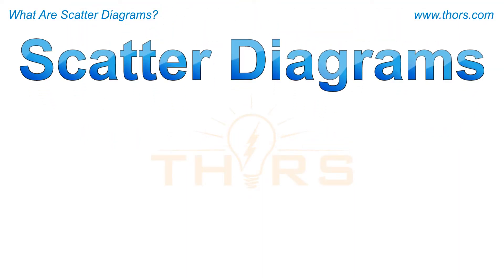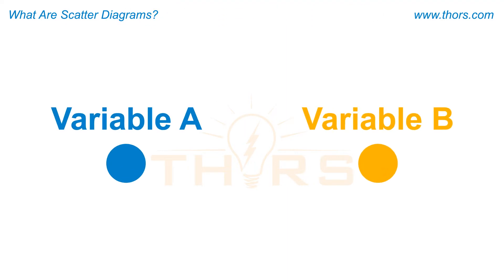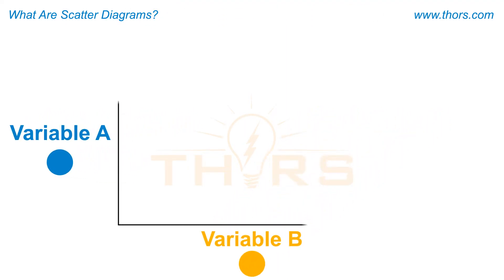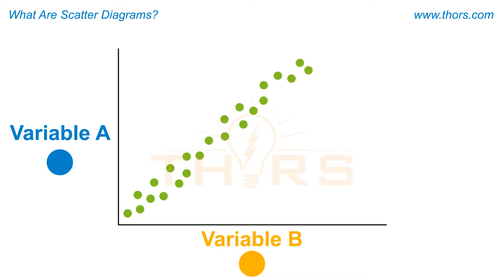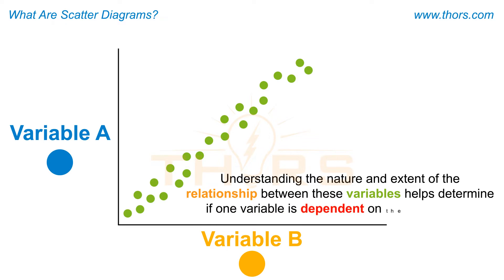Scatter diagrams, also called scatter plots, are a type of graph used to visually represent the relationship between two variables in order to quickly identify the correlation between them. Understanding the nature and extent of the relationship between these variables helps determine if one variable is dependent on the other or not.